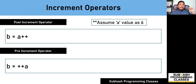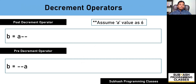As you can see on the screen, I've shown you two different kinds of increment operators. The first one is called the post increment operator and the second one is called the pre increment operator. Similarly, we also have the post decrement operator and pre decrement operator.